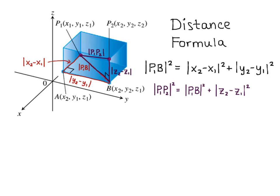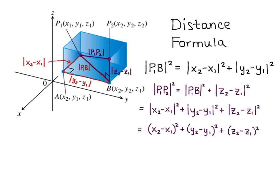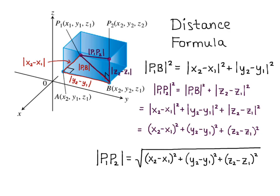We already found that |P1B|² = |X2 − X1|² + |Y2 − Y1|², so substituting in we get |P1P2|² = |X2 − X1|² + |Y2 − Y1|² + |Z2 − Z1|². Because we have squares, we can drop the absolute value signs, giving us (X2 − X1)² + (Y2 − Y1)² + (Z2 − Z1)². So the distance formula is: |P1P2| = √[(X2 − X1)² + (Y2 − Y1)² + (Z2 − Z1)²].